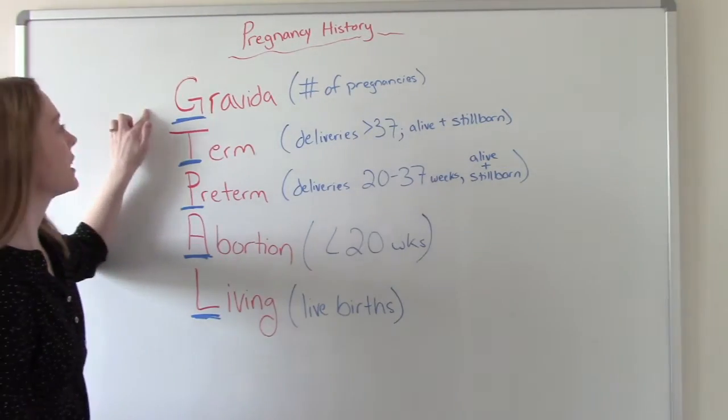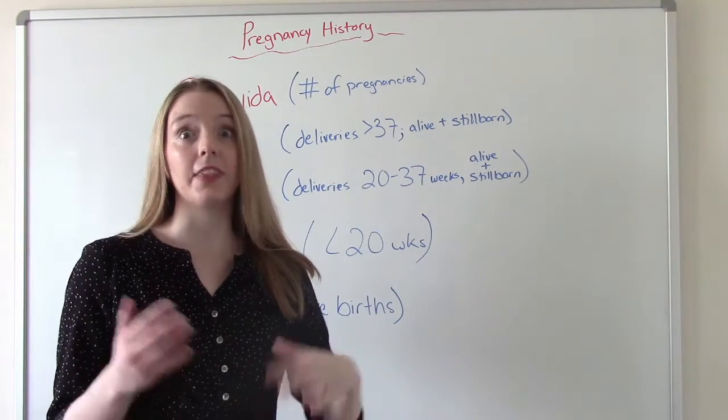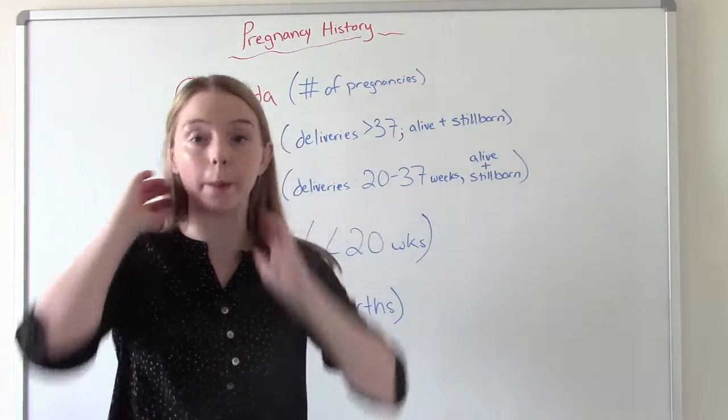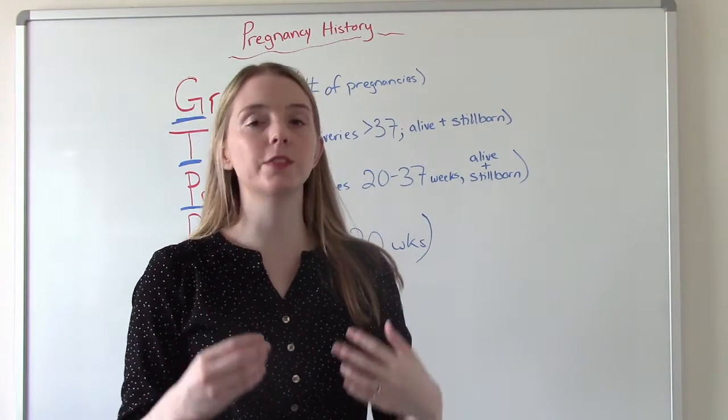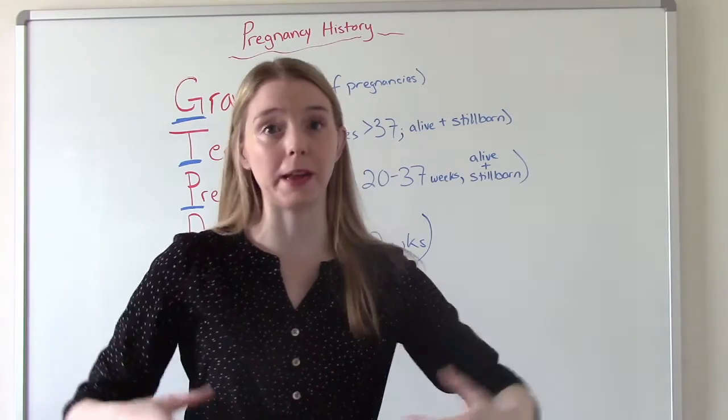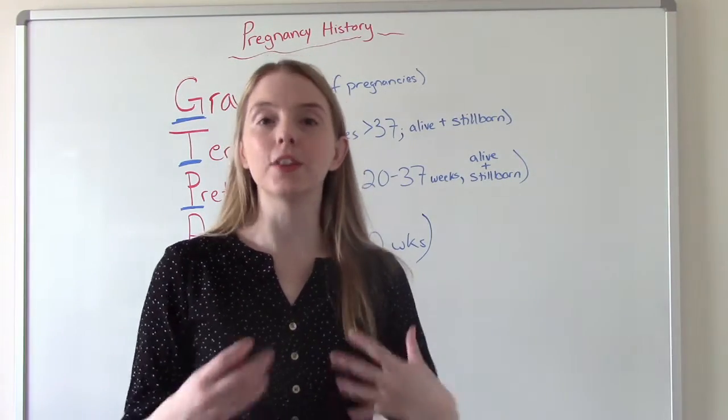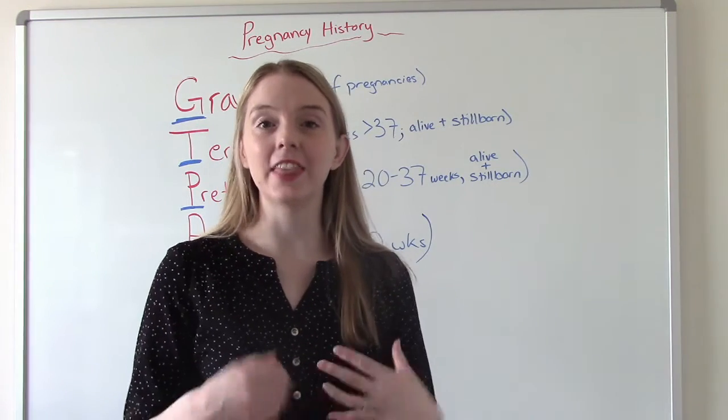So G stands for gravida, which is the number of pregnancies. And this trips people up, especially when we talk about multiples. So when I say number of pregnancies, think of the number of times your uterus has been occupied by a baby or two babies or three babies. It doesn't matter. The number of times your uterus has had somebody in it. That's your gravida.